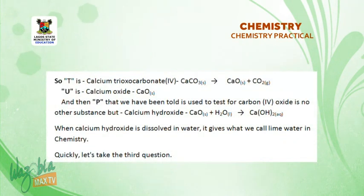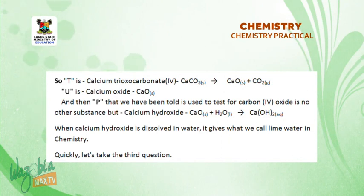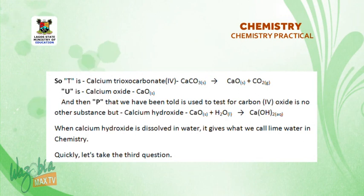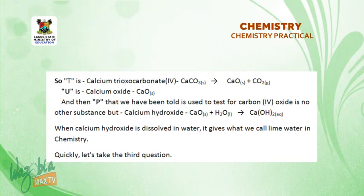So T is calcium trioxocarbonate(IV), U is calcium oxide, and P — which we have been told is used to test for carbon(IV) oxide — is no other substance but calcium hydroxide. When calcium hydroxide is dissolved in water, it gives us what we call lime water in chemistry.